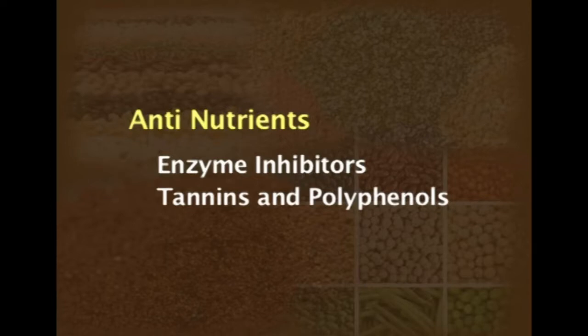The various anti-nutrients include enzyme inhibitors and tannins or polyphenolic compounds. Phytates, as mentioned earlier, are mostly found in cereals in the form of phytate which interfere with the bioavailability of minerals and also proteins. Whereas polyphenolic compounds, tannins and other anti-nutritional factors like enzyme inhibitors are mostly found in millets and also interfere with the digestion and absorption of carbohydrates as well as proteins.